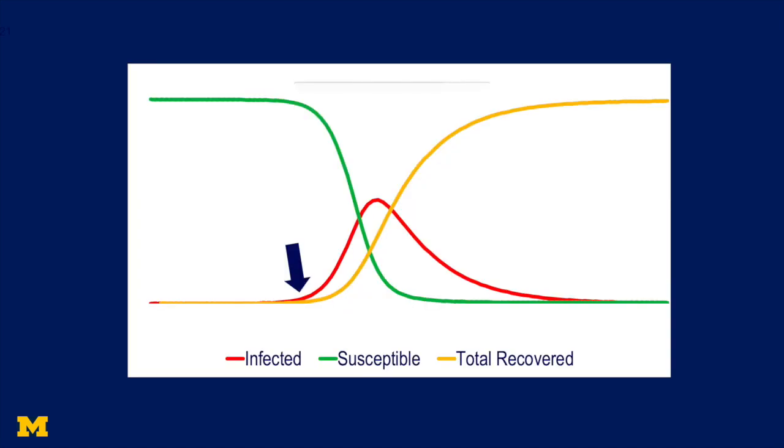So here's what the SIR model produces. It produces this curve, this red curve that we're infected, that starts out slow, goes up and then goes down. Now, what's important about this is early on in this process, you're only going to see a very small slope. You're going to see just a few cases.